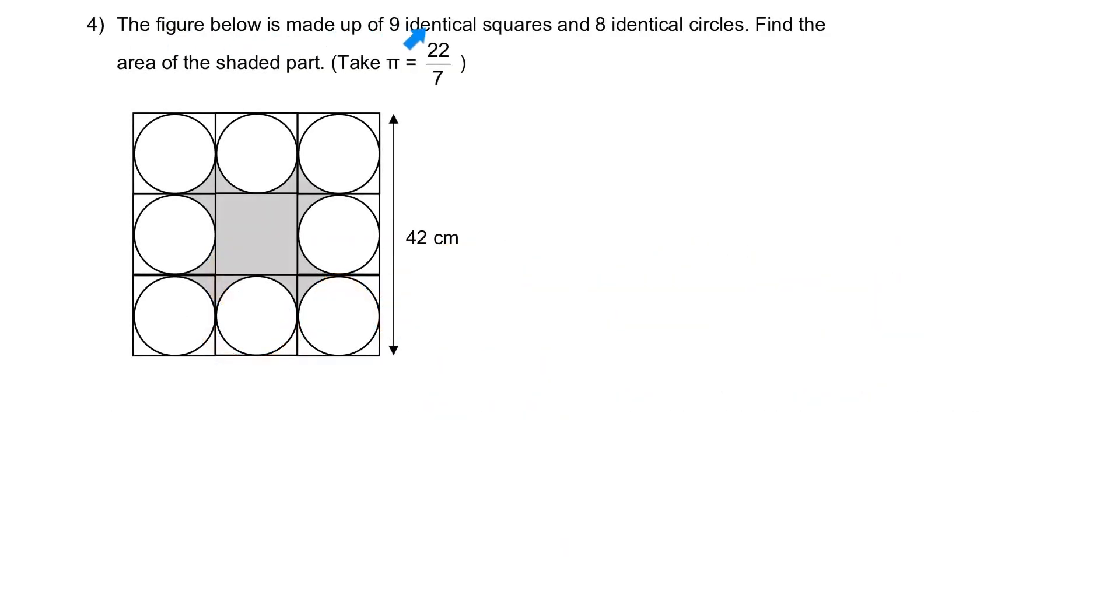The figure below is made out of nine identical squares and eight identical circles. Find the area of the shaded part. Take pi to be 22 out of 7.